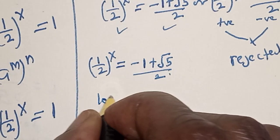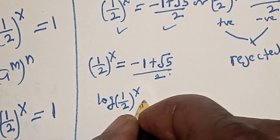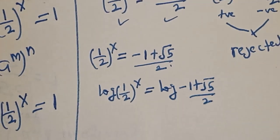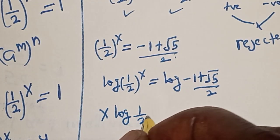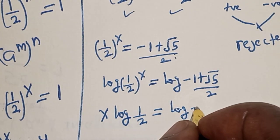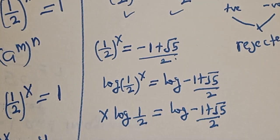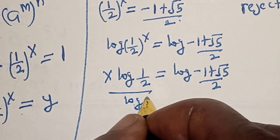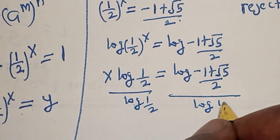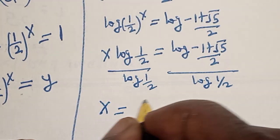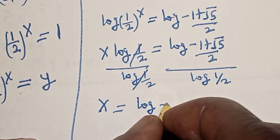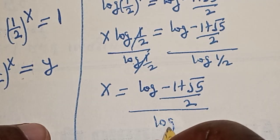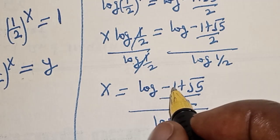Now let's take the log of both sides. Log of 1 over 2 raised to the power s equals log of (negative 1 plus square root of 5) over 2. This gives s times log(1 over 2) equals log of (negative 1 plus square root of 5) over 2. Dividing both sides by log(1 over 2), we get our answer for s. Please like, share, comment, and subscribe.